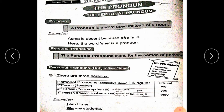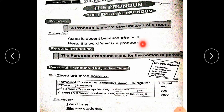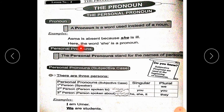Students, a pronoun is a word used instead of a noun. For example: Asthma is absent because she is ill. Here 'she' indicates Asthma. We do not write the noun 'Asthma' again and again in our sentences. Here the word 'she' is a pronoun.